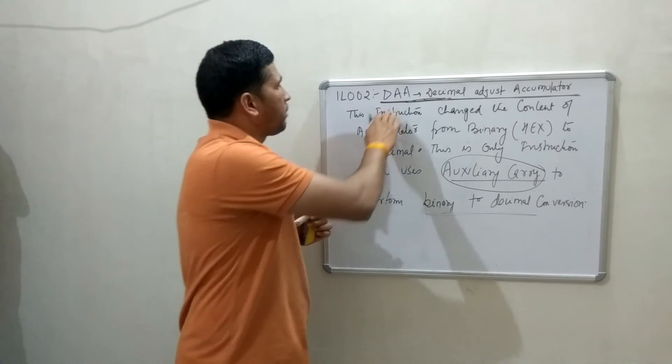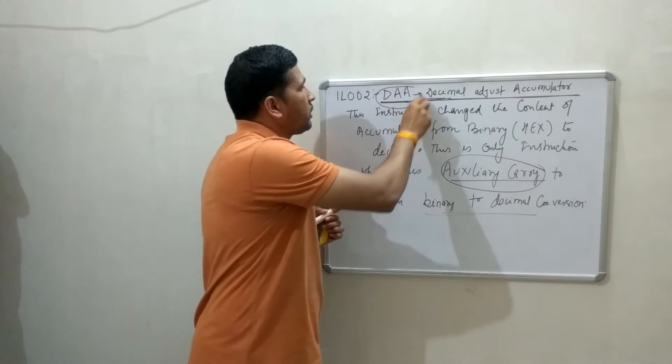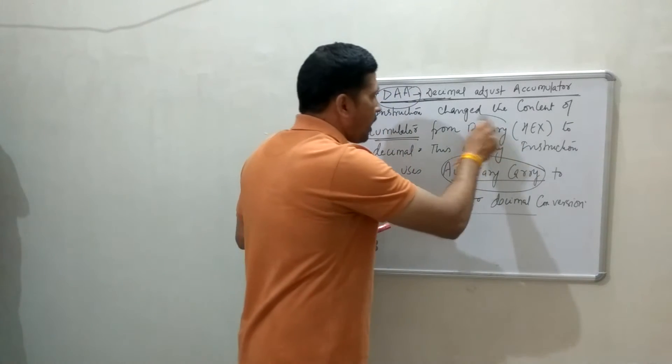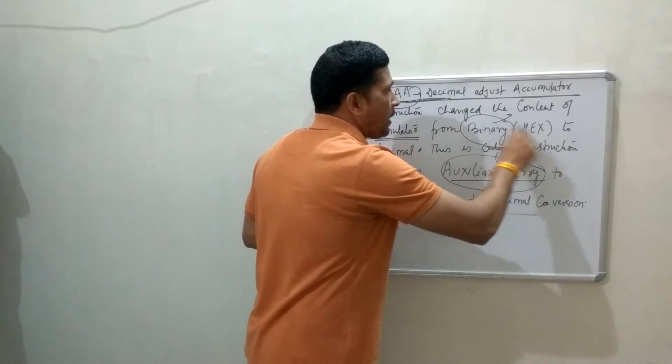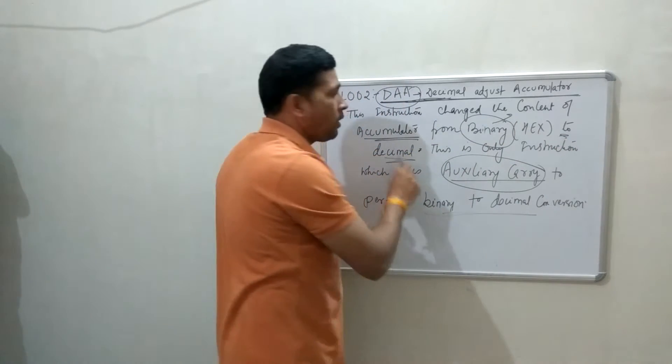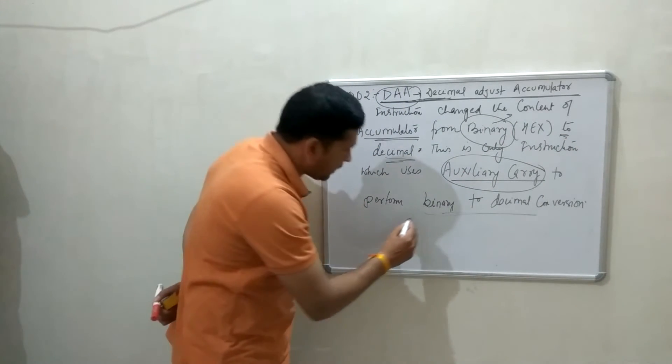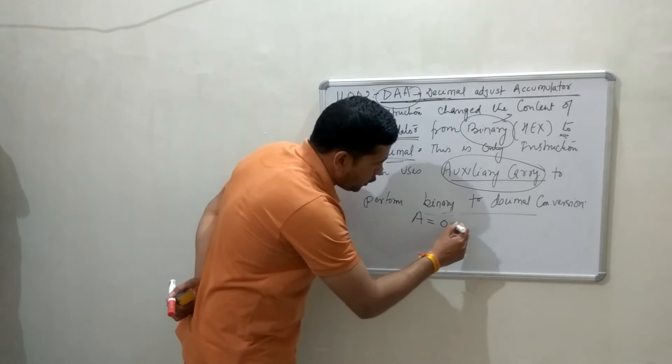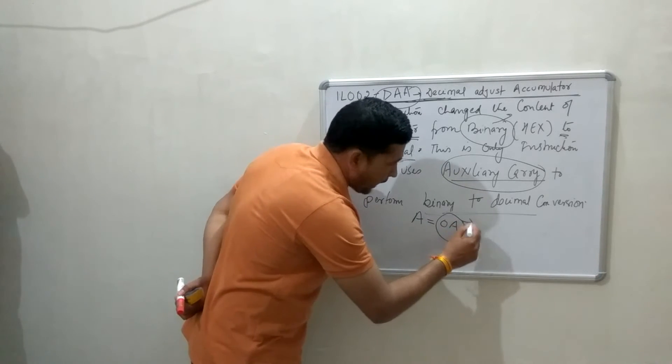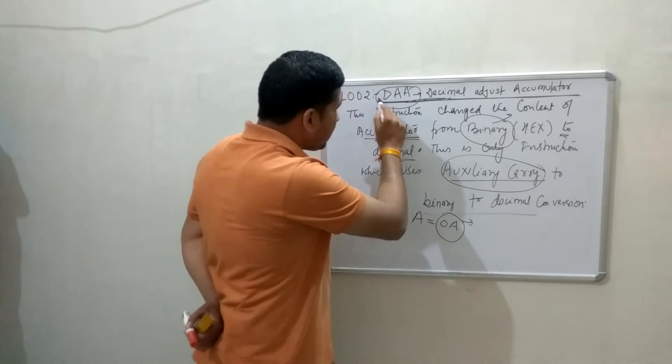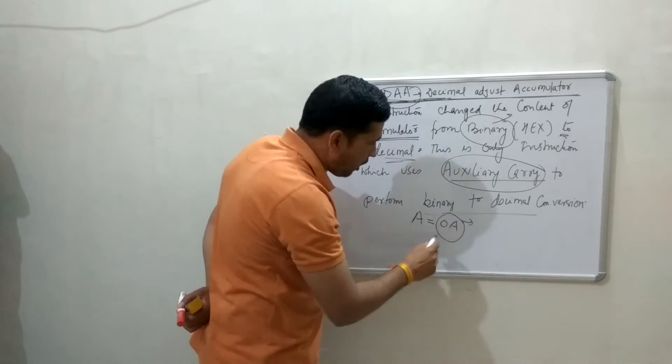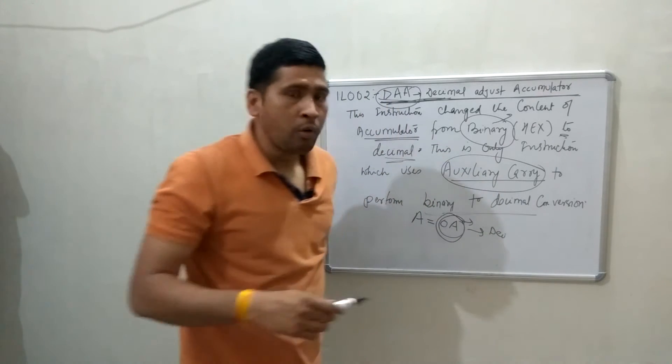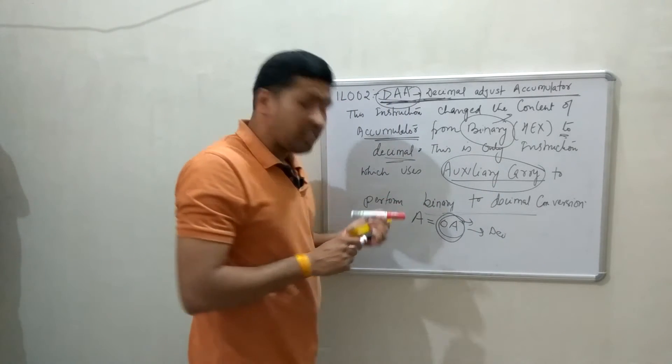In summary, basically this instruction used to convert content of Accumulator which is already in form of binary to decimal value. My meaning is to say that it basically supports Accumulator content 0A. This is hexadecimal value. This instruction will convert this value into decimal value. Now, how this instruction works.